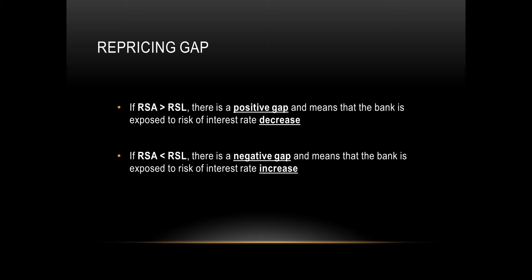There are two key relationships to note. If your rate-sensitive assets are greater than your rate-sensitive liabilities, there is a positive gap, and that means the bank is exposed to a risk of interest rate decrease. If RSA is less than RSL, then there is a negative gap, and it means the bank is exposed to a risk of interest rate increase instead. Repricing gaps are very important for banks because banks need to constantly adjust their repricing gaps to make them either more positive or more negative depending on their forecasted interest rate changes.